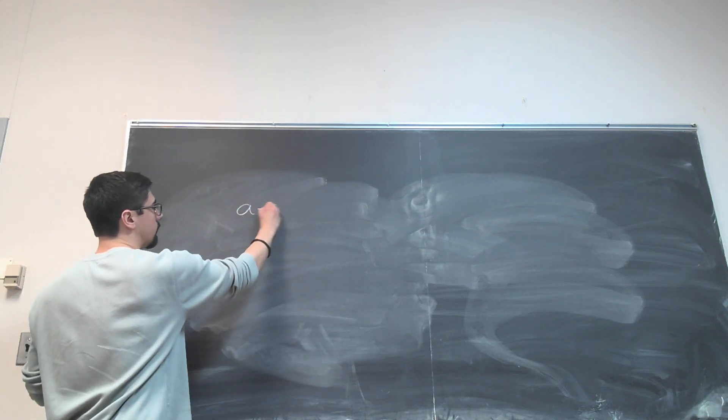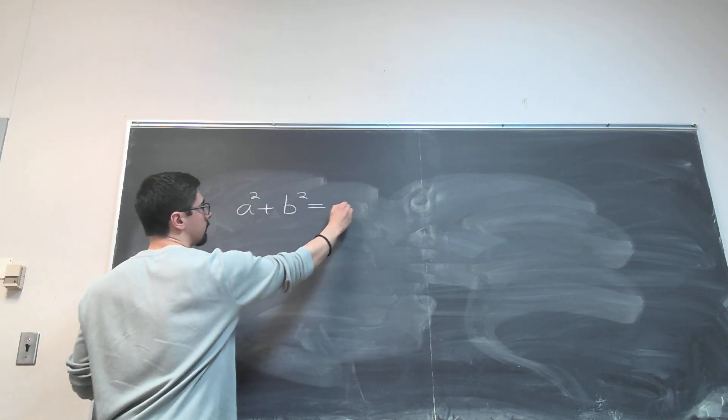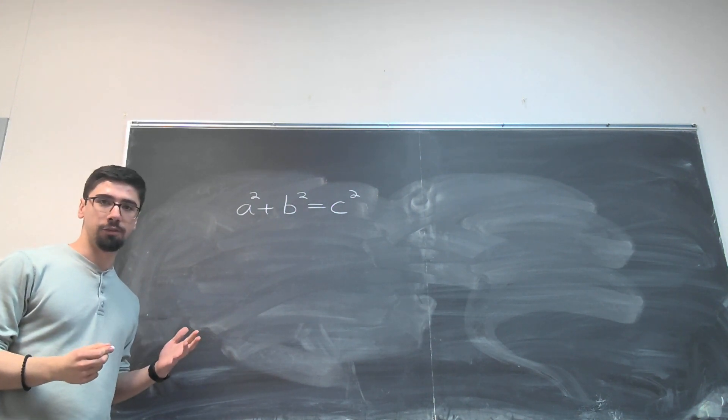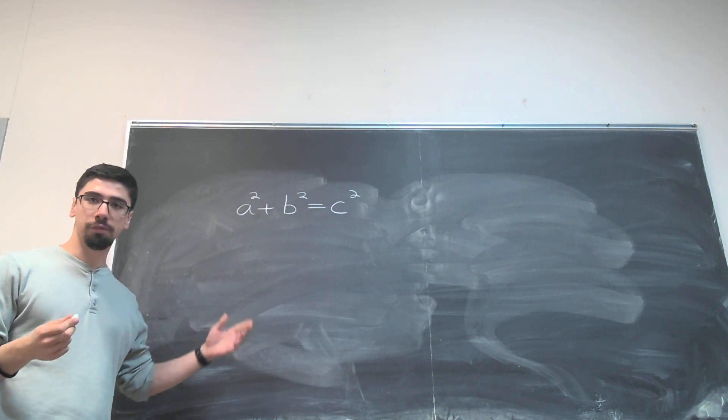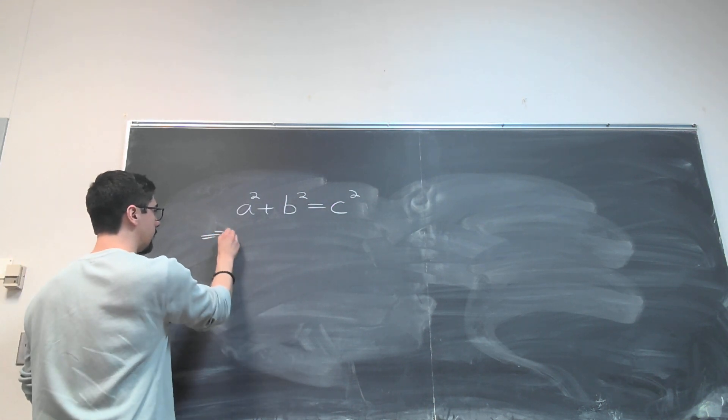Let's go ahead and first get some motivation for this. Pythagorean triples is when you have three natural numbers a, b, and c so that a squared plus b squared equals c squared. Now the first step in this construction is that I'm going to divide both sides of this equation here by c squared.